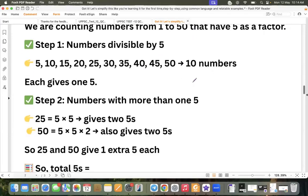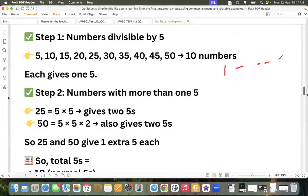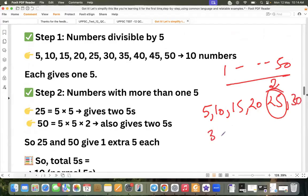So the one way is that you are calculating 1 to 50 factorial, how many times 5 is coming. So it will come like this: 5, 10, 15, 20, 25 - 25 there will be 2 fives. 30, 35, 40, 45, 50.